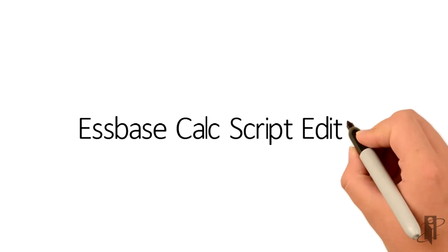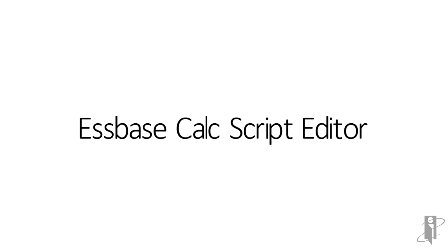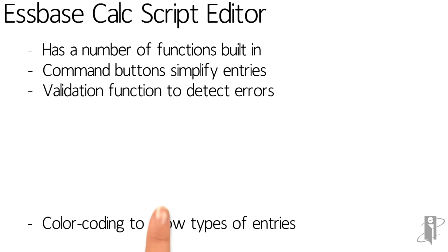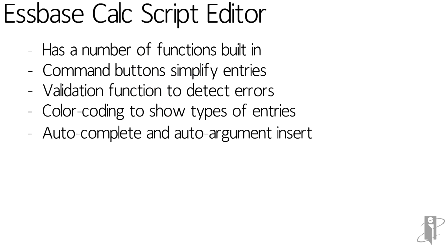Now there are a lot of functions that are built into the Calc Script Editor in EAS. There are some buttons that help you type in things. There's a built-in validation function to help you find errors, and it puts those down in the little error message window at the bottom. There's color coding so that you can not only make things more colorful, but easily find functions or member names or set commands.